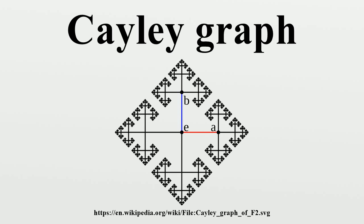If the generating set has elements, then each vertex of the Cayley graph has incoming and outgoing directed edges. In the case of a symmetric generating set with elements, the Cayley graph is a regular directed graph of degree.